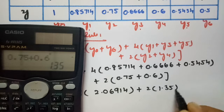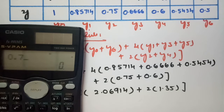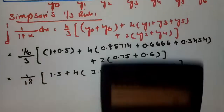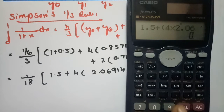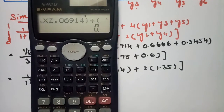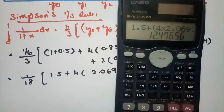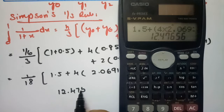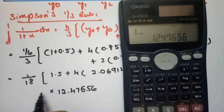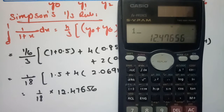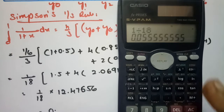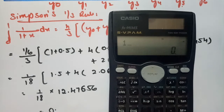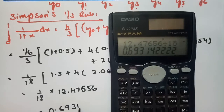Adding it all up: 1.5 + 4 × 2.06914 + 2 × 1.35 = 1.5 + 8.27656 + 2.7 = 12.47656. Dividing by 18 gives 12.47656 / 18 = 0.693142. So according to Simpson's 1/3 rule, the value of the integral is 0.693142.